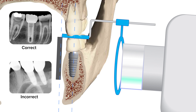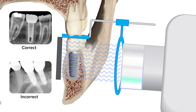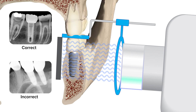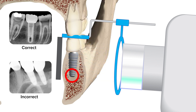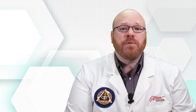Second, the x-ray should capture the entire implant. The most apical end of the implant is just as important as the interface during the identification process. It may take multiple tries to get the ideal position, but this is essential for correct identification.